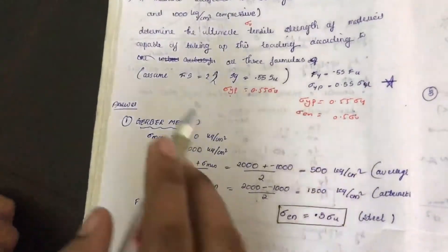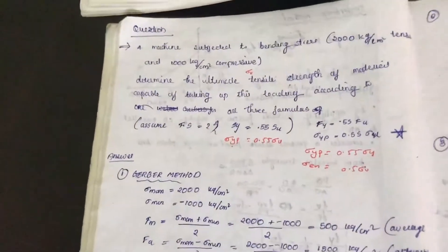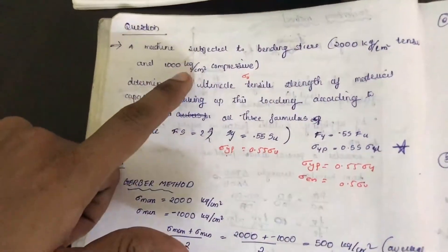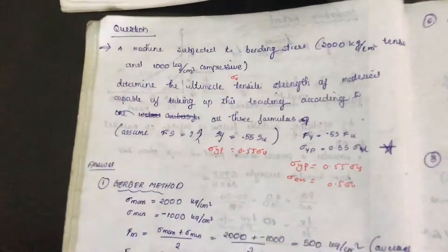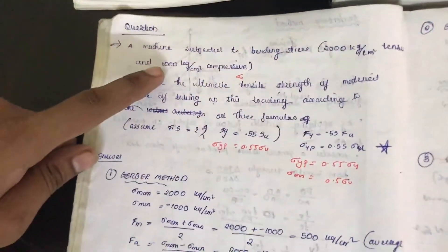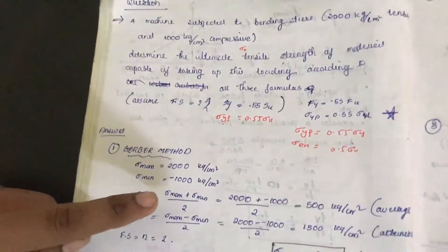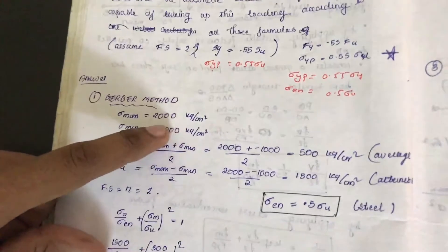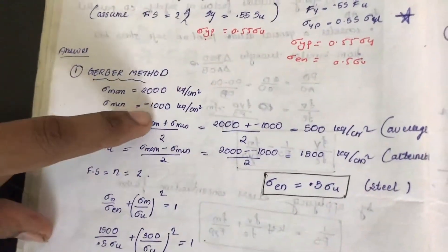The machine is subjected to bending stress 2000 kilogram per centimeter square and 1000 kilogram per centimeter square. That means tension and compression. Tension will be taken as positive and compression as negative. So sigma max will be 2000, sigma minimum is 1000.